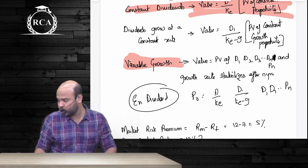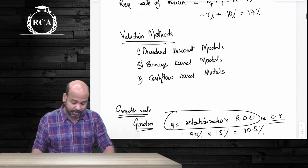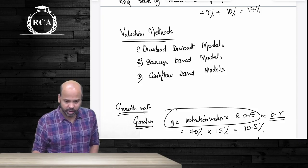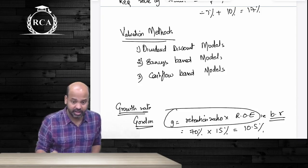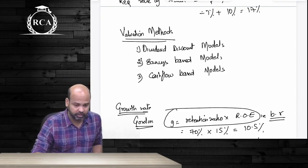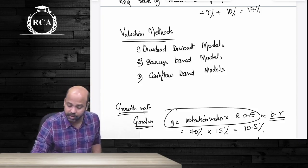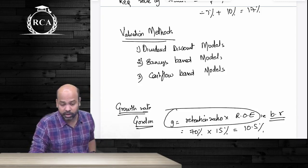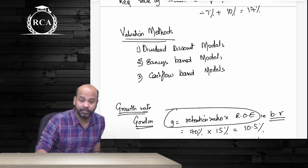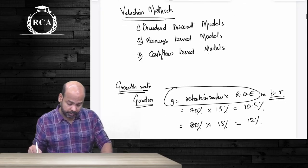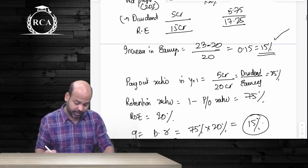Moving on to the next concept: the earnings growth model. Based on the earnings model, the equity share is valued on the basis of a company's earnings. We have Gordon's model, Walter's model, and the PE multiple — three concepts under the earnings-based model.